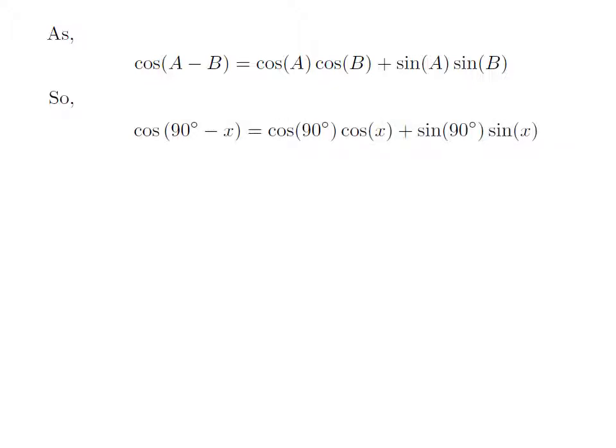Let's apply the above identity for cosine of 90 degree minus x. Here, a is 90 degree and b is x. So, cosine of 90 degree minus x is equal to cosine of 90 degree into cosine of x plus sine of 90 degree into sine of x.